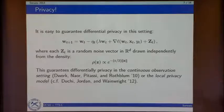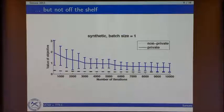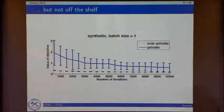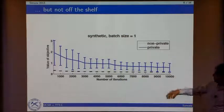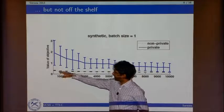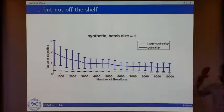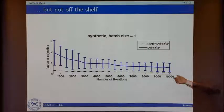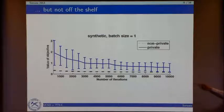So why don't we just do it? What happens? Not so great. Here I'm plotting results for synthetic data — a uniform distribution on the sphere. The standard algorithm converges after 1,000 iterations without noise: done. Whereas the differentially private algorithm not only has pretty large variance, it takes a long time. You would need a pretty large data set if you're going single scan to get close to what you'd get without privacy.